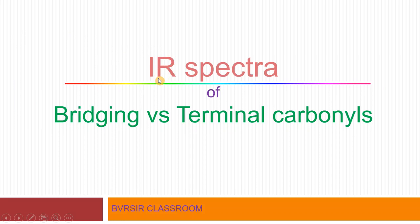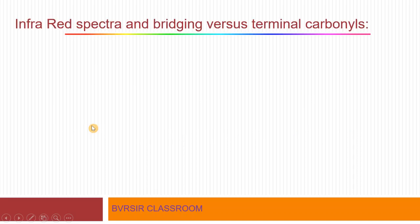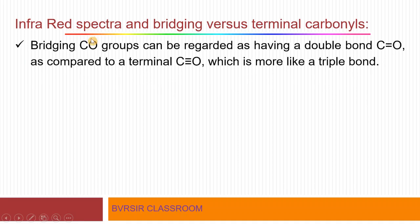Now let us move to the next topic: infrared spectroscopy of bridging versus terminal carbonyls. In previous videos on metal carbonyls, we discussed that carbon monoxide can bond to metals in different ways — some carbon monoxides act as terminal carbonyls and some as bridging carbonyls. We can differentiate between bridging and terminal carbonyls using infrared spectroscopy. Bridging carbon monoxide groups can be regarded as having a double bond C=O character.